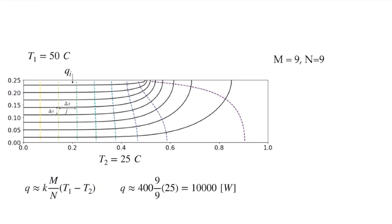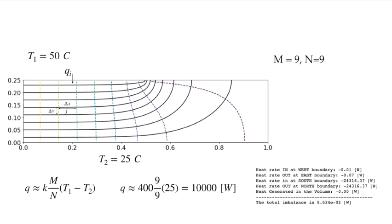For this drawing, with conductivity of 400 watts per meter Kelvin, m equals 9 heat lanes, n equals 9 spaces between temperature contours, and a temperature difference of 25, I would get 10,000 watts. As we saw from the numerical calculation, we actually have 24,316 watts. I can clearly see that these are not squares, which means I have too many temperature contours relative to the number of heat lanes.